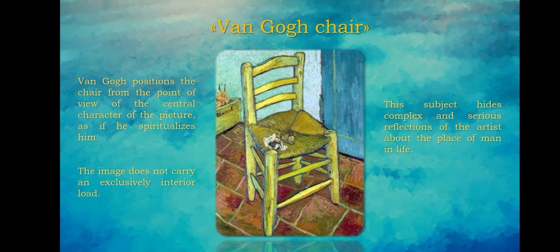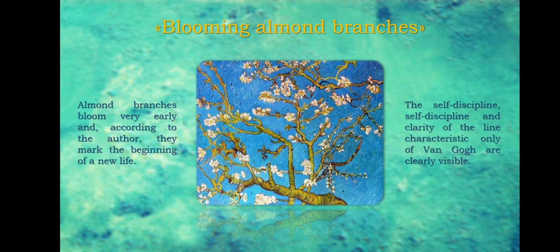The painting amazes with its unusual composition. Van Gogh positions the chair from the point of view of the central character of the picture. The subject hides complex and serious reflections of the artist about the place of man in life. An empty chair is a symbol of this for Van Gogh. The painting carries a deep connotation.